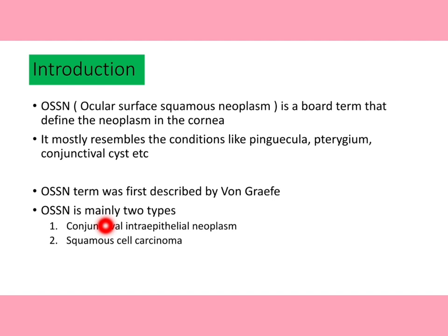Conjunctival intraepithelial neoplasm is a non-invasive carcinoma where the basement membrane remains unaffected and the cells do not spread to the substantia propria. It is the most common tumor of the ocular surface, with cells in a pre-malignant stage. CIN is mostly benign in nature, remaining on the ocular surface, and can also grow over the cornea.